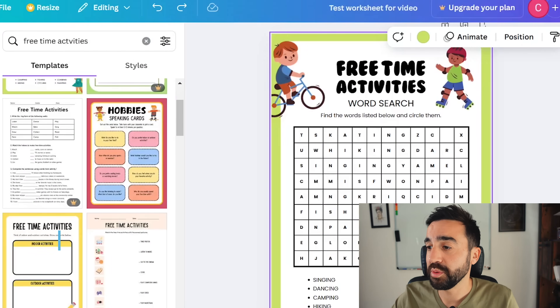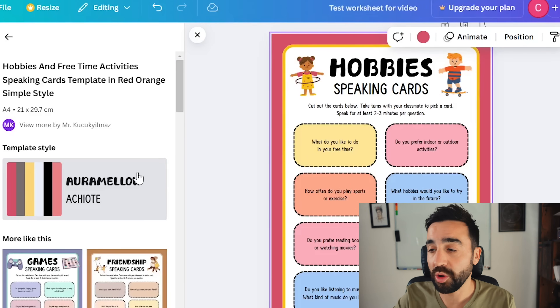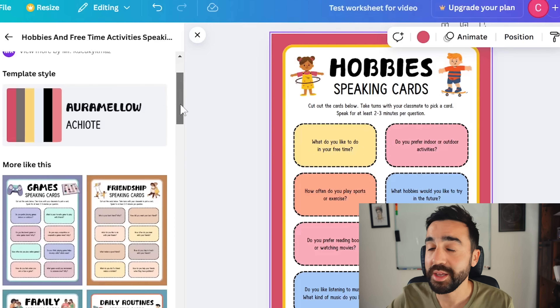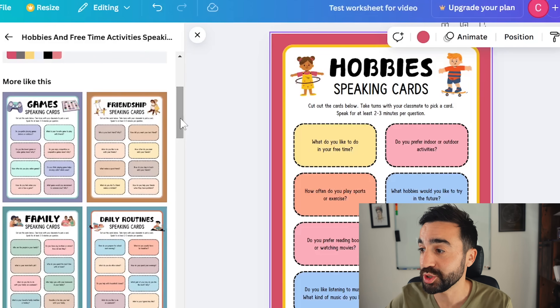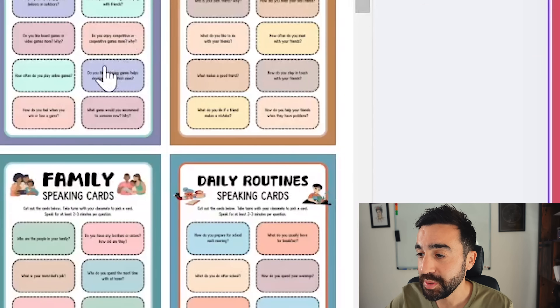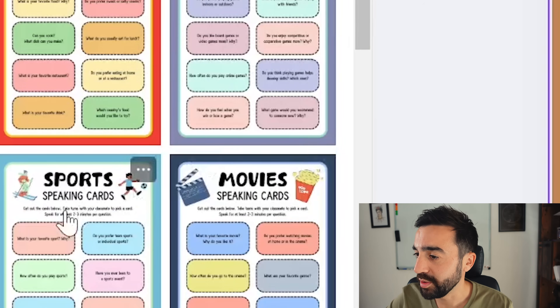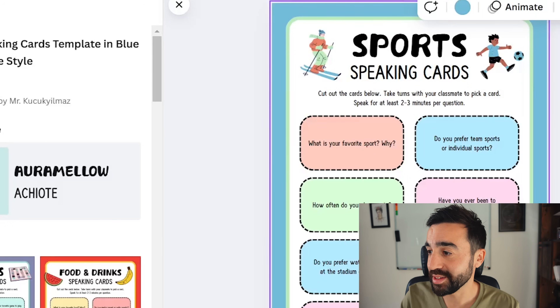Another really smart thing Canva does is give you suggestions based on templates you've chosen. For example, after selecting those free time activities speaking cards about hobbies and placing it in my design, Canva now shows me 'more like this' on the left-hand side. I've got speaking cards on other topics using the same design — games, friendship, sports — all ready to go.